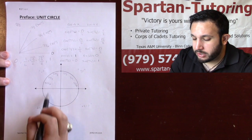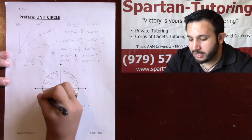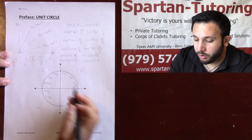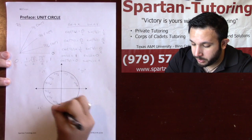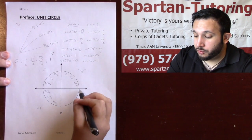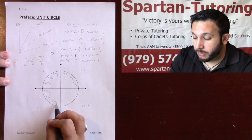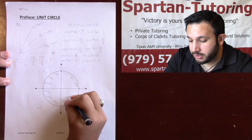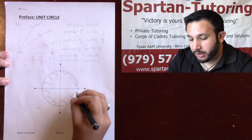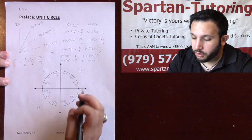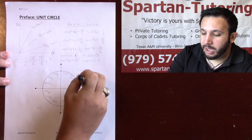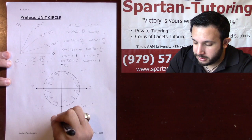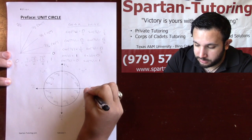Fourth quadrant is 'times 2 minus 1': 3 times 2 minus 1 gives 5pi over 3, 4 times 2 minus 1 gives 7pi over 4, 6 times 2 minus 1 gives 11pi over 6. The corners are 0, pi over 2, pi, 3pi over 2, and 2pi to complete the circle.